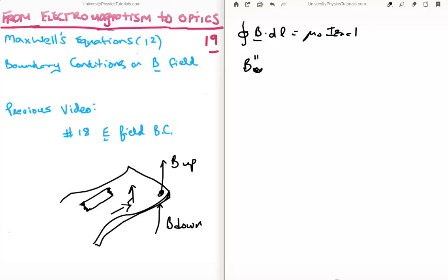What we'll get is that B parallel above minus B parallel below, multiplied by the length of the loop, is equal to mu_0 times the length of the loop times the surface current K.